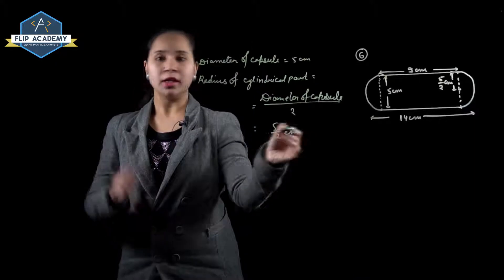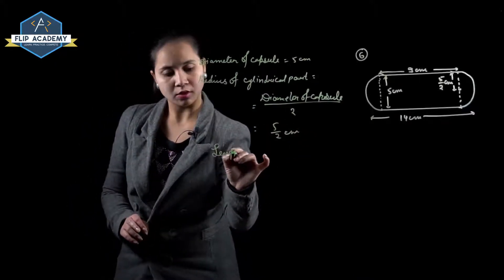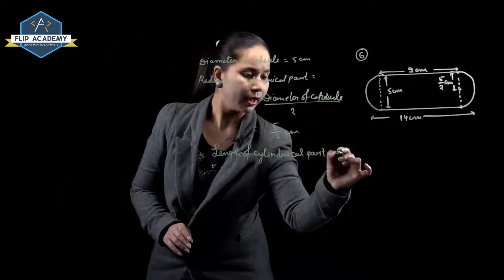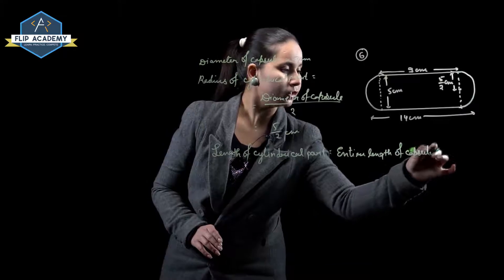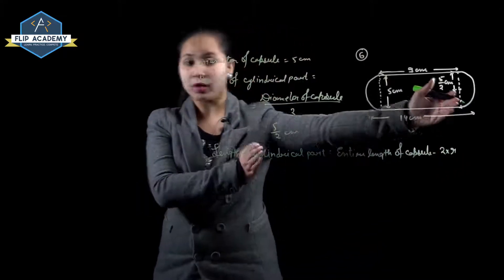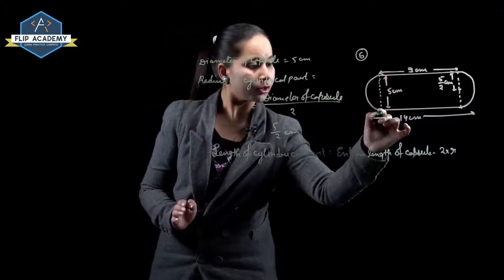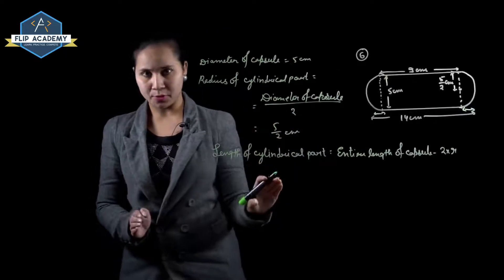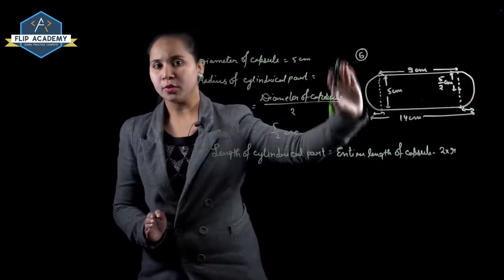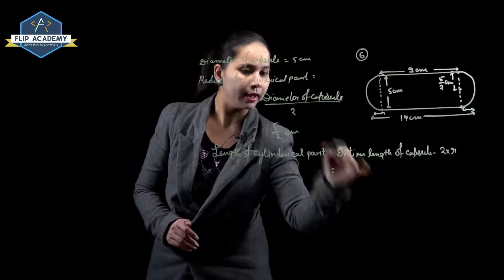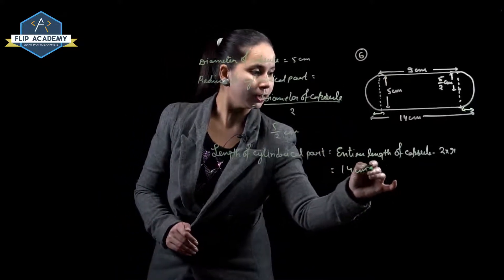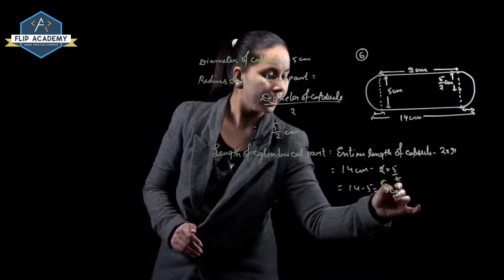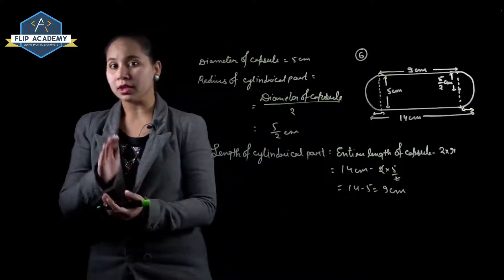Length of cylindrical part equals entire length of capsule minus 2 times the radius of the hemispherical part. Overall length is 14 mm and radius of each hemispherical part is 5 upon 2, so length of cylindrical part equals 14 minus 2 into 5 upon 2, which is 14 minus 5, equal to 9 mm.